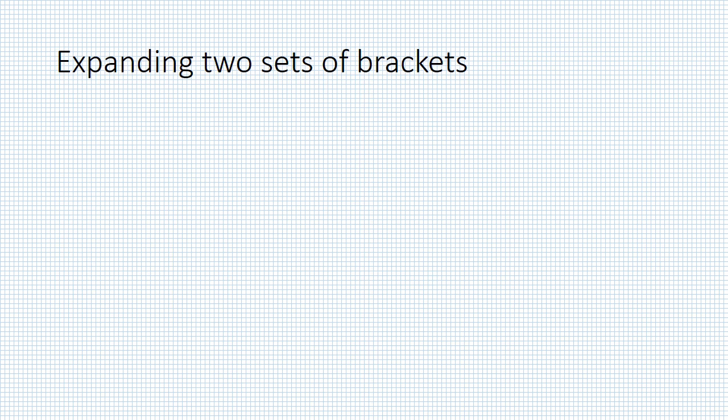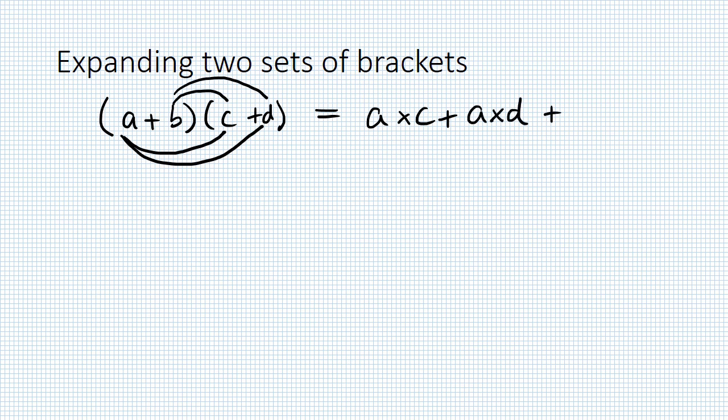Welcome back. We're looking now at expanding two sets of brackets. Let's start by writing down the rule. We've got (A + B) times (C + D) equals those two multiplied together, those two, these two and those two. So AC + AD + BC + BD.